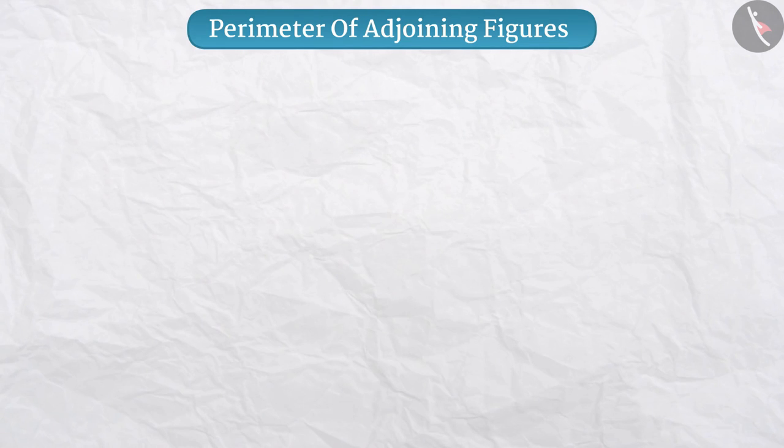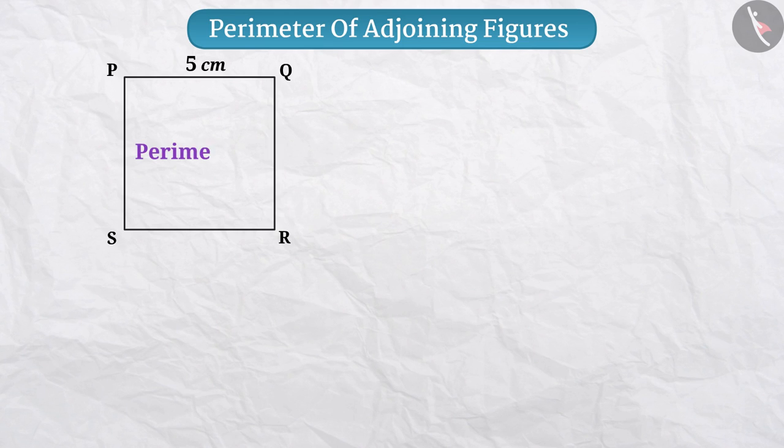Take a paper. Draw a square PQRS with side 5 cm on it. Can you tell what will be its perimeter? Exactly.